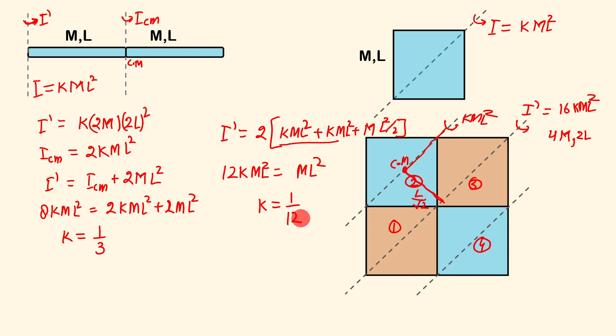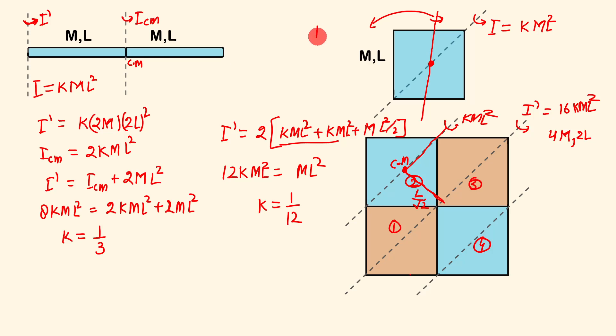This is also one example where we can use this method. An important result to share: if you take any axis that is in the plane of this square and passing through the center of mass of this square, the moment of inertia is going to remain the same — (1/12)ML². This result will have a similar bearing when we move forward to the case of the cube. So if you have learned this method, you should pause this video right away and try to do the original question on your own.